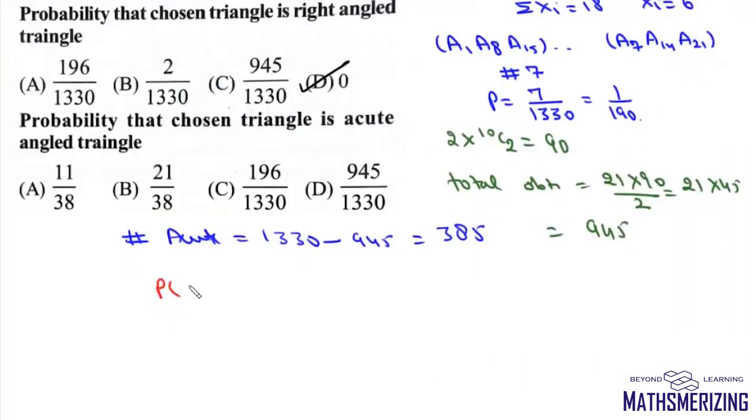So the required probability that this triangle is acute-angled will be given by 385 upon 1330, which is 11 by 38, and that's your option A.